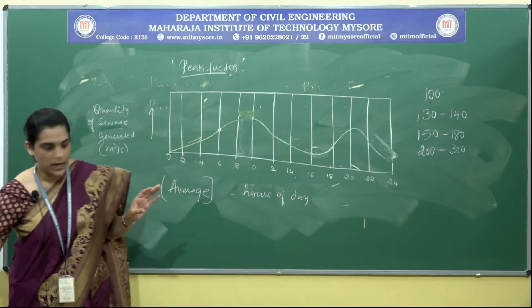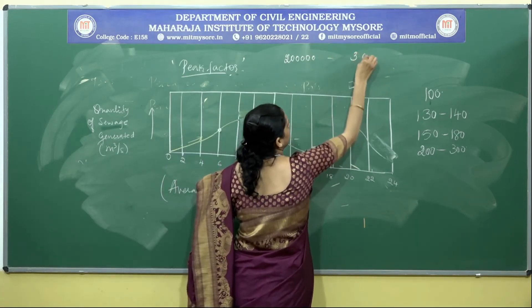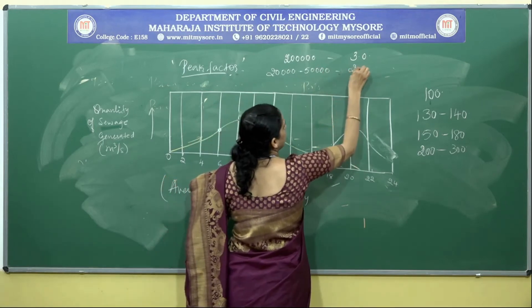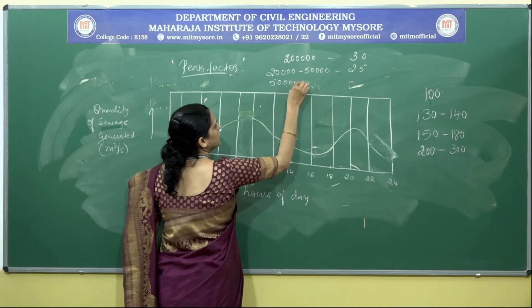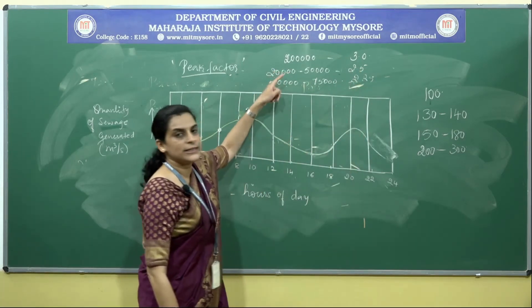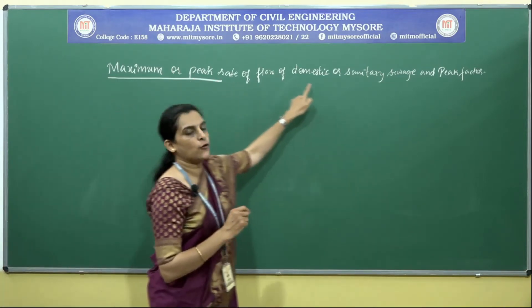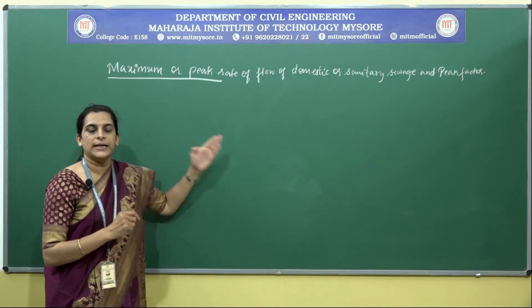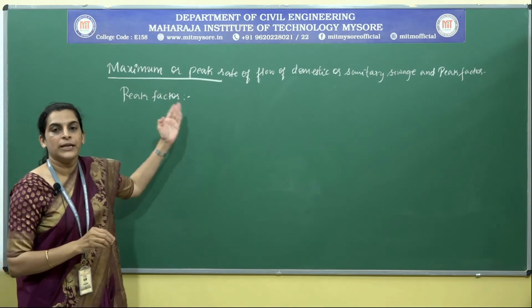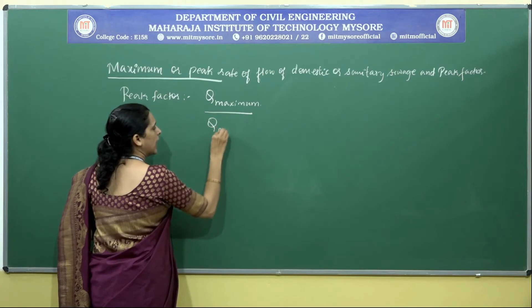For example, if the contributing population is around 20,000, the peak factor will be 3. If between 20,000 to 50,000, the peak factor is 2.5. If 50,000 to 75,000, it is 2.25. We can see that with increase in population, the peak factor is lessening. For design of sewers, maximum or peak rate of flow of domestic sewage must be considered, based on the peak factor, which is the ratio of maximum flow to average flow.